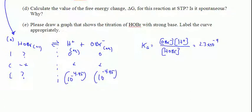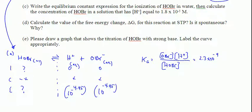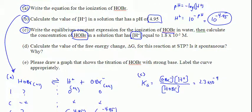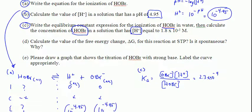Okay, back to this problem. I believe we are at part C here. We calculated the value of H plus and wrote the equilibrium constant expression for the ionization of HOBR. Now calculate the concentration of HOBR in a solution that has H plus equal to exactly 1.8 times 10 to the minus fifth. They give us Ka in this problem.